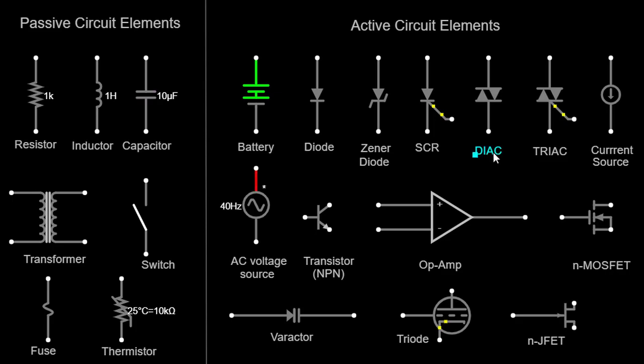DIAC. Diode for alternating current, DIAC is a two-terminal device that conducts current in both directions when a certain voltage threshold is reached. It is often used in triggering TRIACs and other devices in AC circuits. DIACs are represented by two diodes connected back-to-back.